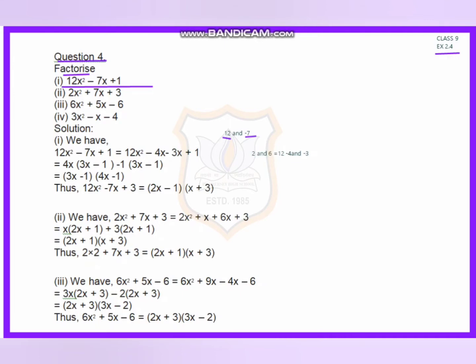Now I have to split the middle term. So minus 7x can be written as minus 4x minus 3x. From the first two terms I take common 4x, leaving bracket 3x minus 1. From the last two terms I take common minus 1, leaving bracket 3x minus 1. Taking 3x minus 1 as common, the remaining factor is 4x minus 1. So 12x squared minus 7x plus 1 equals (4x minus 1)(3x minus 1).